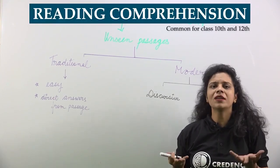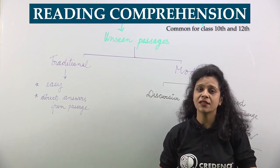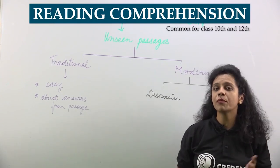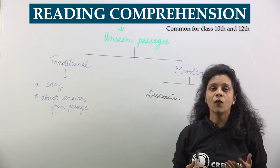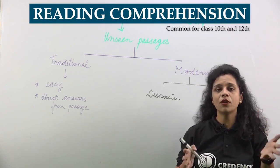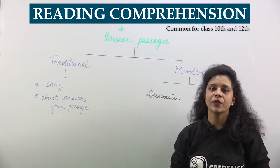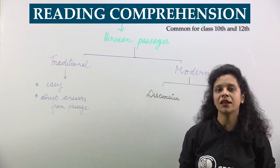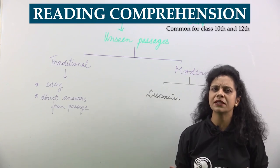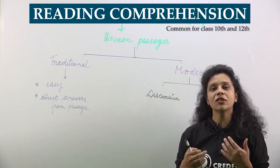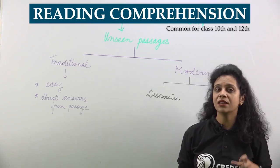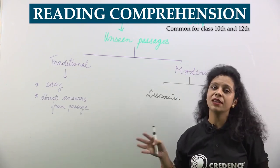I know all of you know what reading comprehension actually is, but do you know that reading comprehension is the most scoring portion of your English paper? Why? Because it is the only portion where you can easily score full marks — 20 out of 20 — because there are lesser chances of grammatical errors. In writing skills or literature we have grammatical errors, and you cannot score full marks there, but that can be done in the reading section.